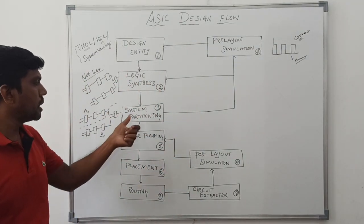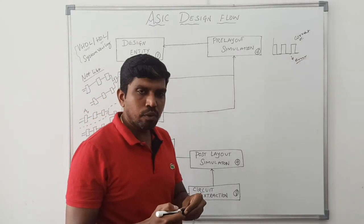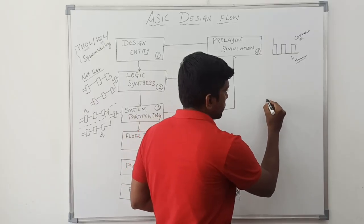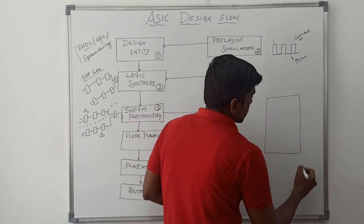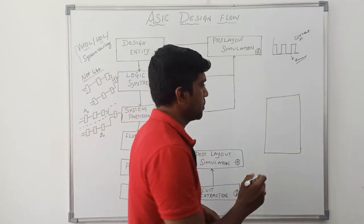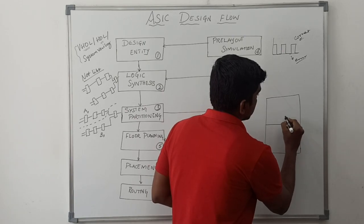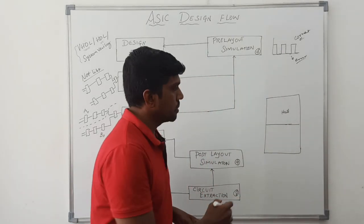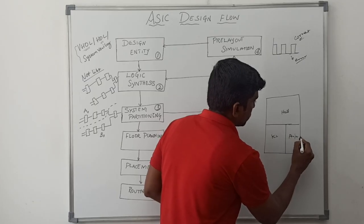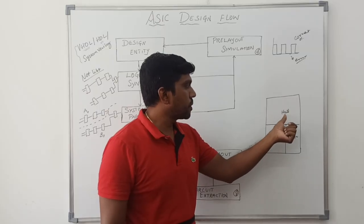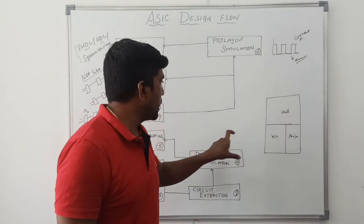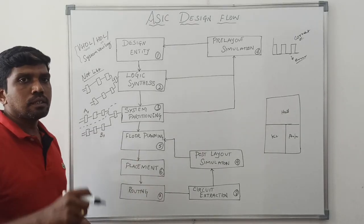Once the result is correct, we move to floor planning. I will explain floor planning with a building example. Suppose I need to construct a building on my land. The first step is getting a blueprint. In this building there is a hall, a kitchen, and a puja room. The hall needs more space, the kitchen needs small space, and the puja room needs very small space. Similarly, in ASIC design, the floor plan is about locating the logic cells on the chip.